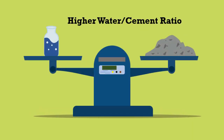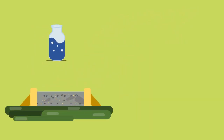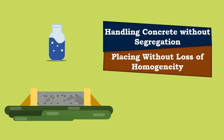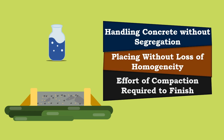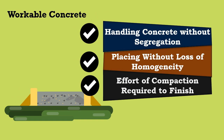Generally, to compact the concrete fully, a higher water-cement ratio is adopted. Water functions as a lubricant in the concrete, which eases the compaction process. Thus, water is required for handling concrete without segregation, for placing without loss of homogeneity, and for the effort of compaction required to finish the concrete easily. The quality of concrete satisfying all these requirements is termed as workable concrete.